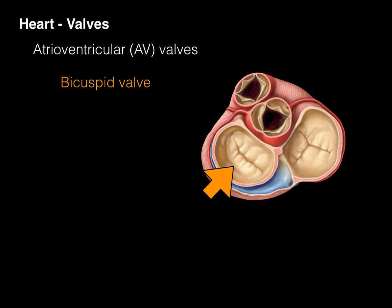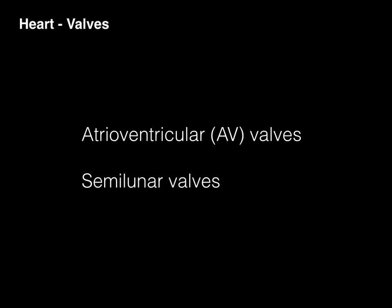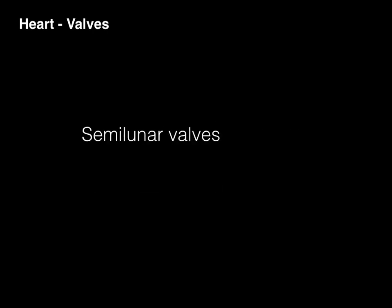Now bicuspid valve. That has two cusps. There's one cusp and there's another cusp. And so that's the bicuspid valve. Now let's take a look at semilunar valves, shall we?